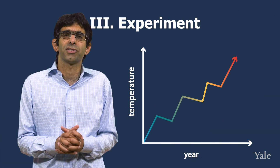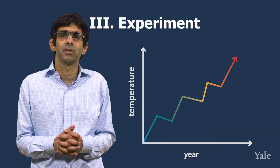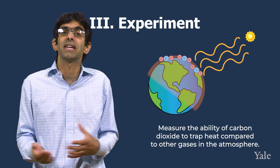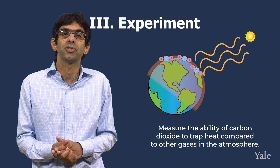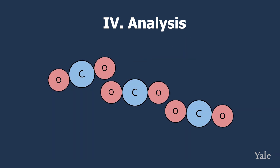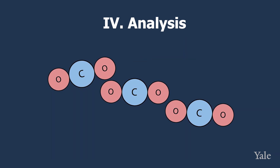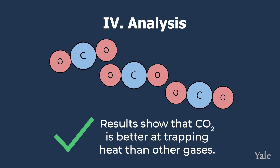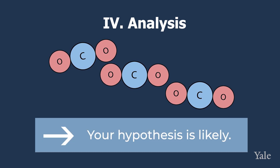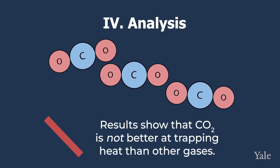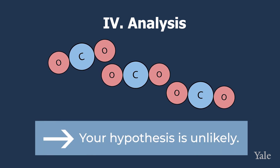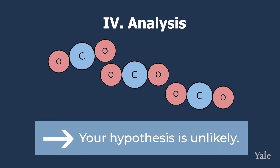To test your hypothesis, you perform an experiment. You might measure the ability of carbon dioxide to trap heat compared to other gases in the atmosphere. Then you analyze the results of the experiment. If the results show that carbon dioxide is better at trapping heat compared to other gases, your hypothesis seems likely. But if the results show that carbon dioxide is worse at trapping heat than other gases, it seems unlikely that carbon dioxide is causing the hotter temperatures.